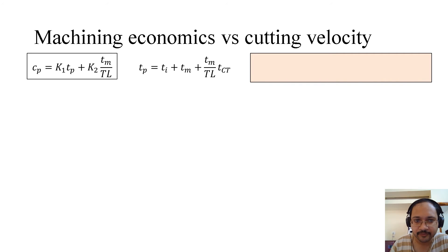Now next is, we have to derive the expression for the cost per piece. So cost per piece is K1 and K2, they are now related in an expression called cp equals to K1 tp. tp is the time per piece plus K2, that is the tooling cost times tm over tl, machining time over tool life. Now tp, we have already seen it is this form.